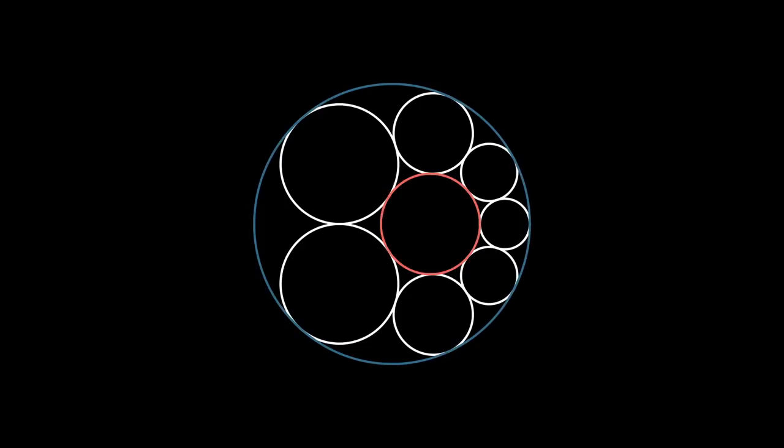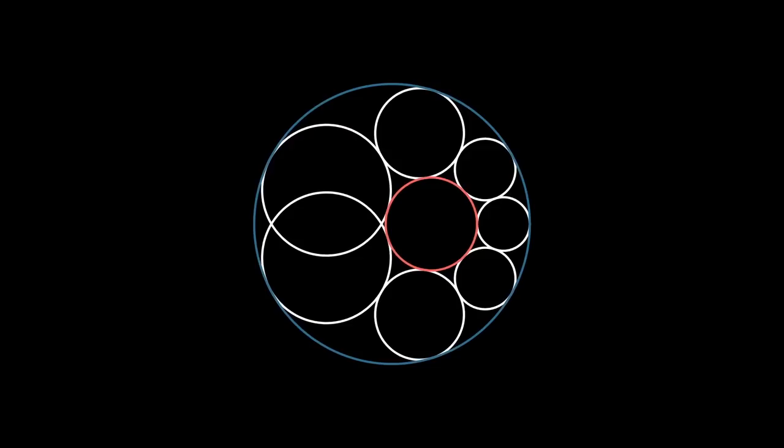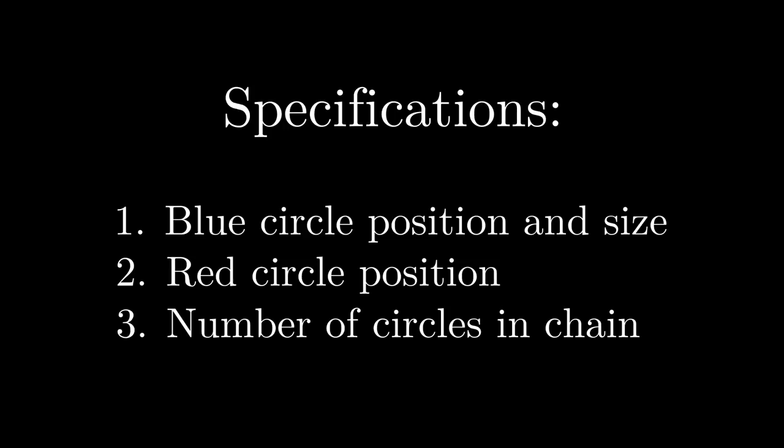I've left out the size of the red circle because we can actually infer that from how many circles there are in the chain. If the red circle is too big, the chain doesn't reach all the way around, we don't have enough circles. And if it's too small, the chain overlaps itself because there's too many circles. So these three specifications are enough to uniquely determine the size of the red circle.